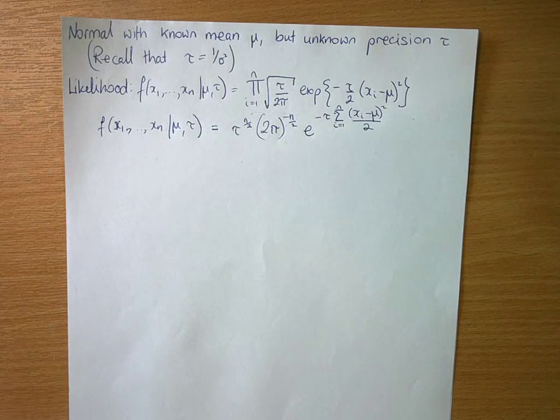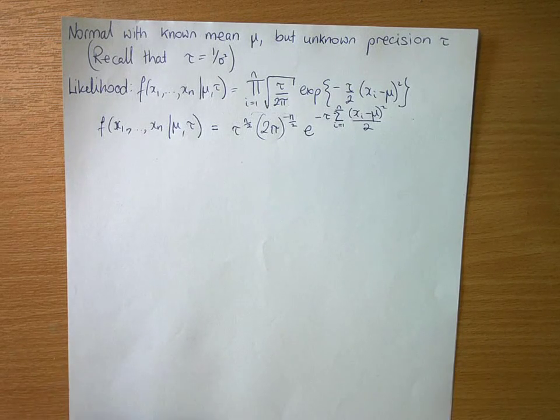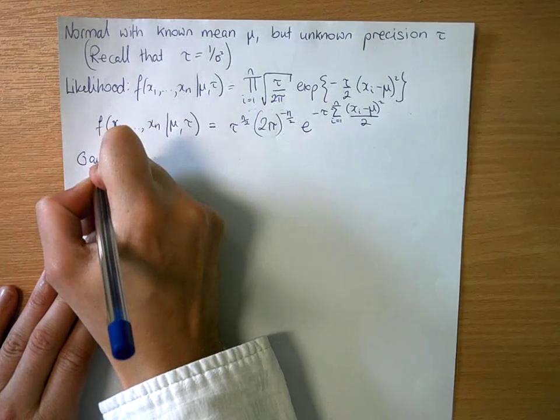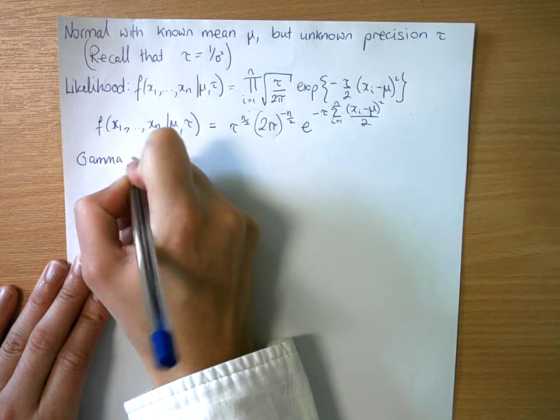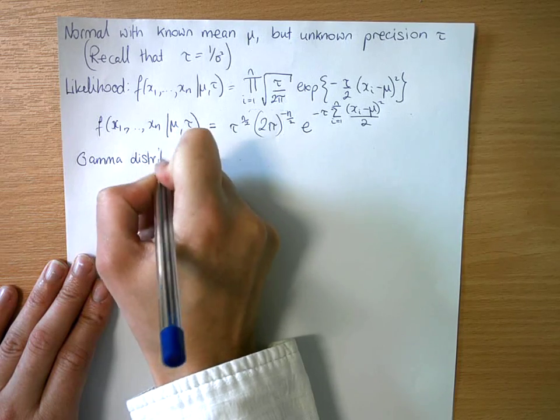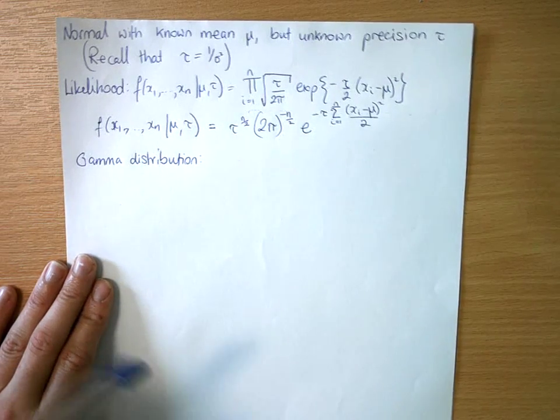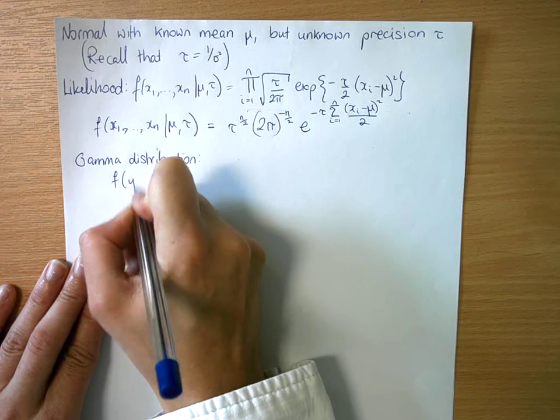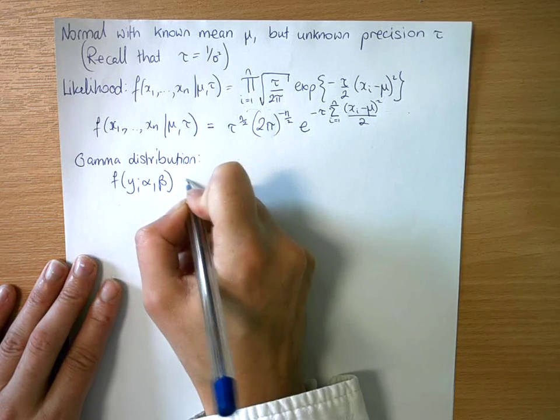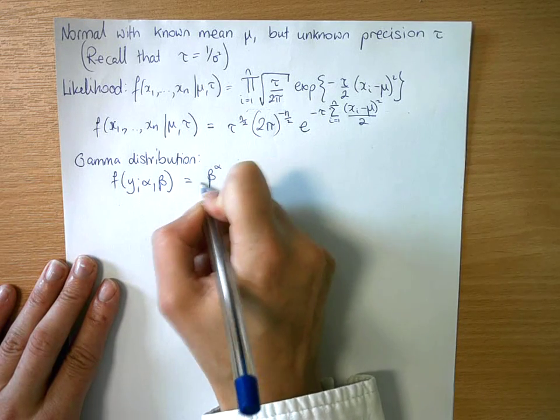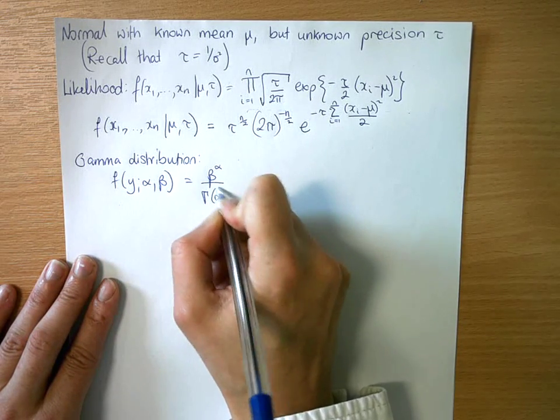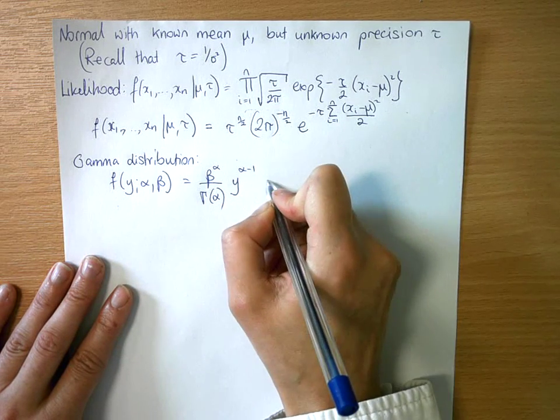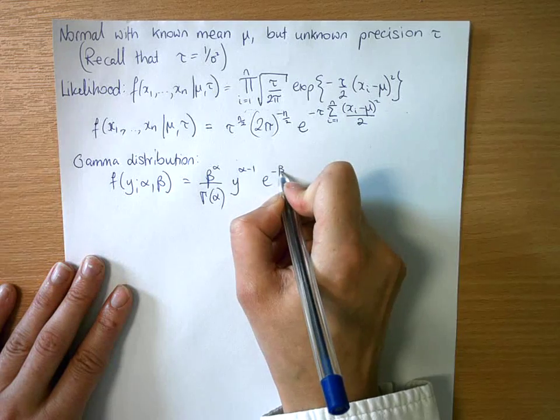So we want to think about a distribution that might fit naturally with this. So we recall the form of a gamma distribution. And think, standardly we might be using a random variable such as y. So we would have f(y | α, β) with alpha and beta our parameters. We would have it as being β^α over the gamma function of alpha, y^(α-1), e^(-βy).